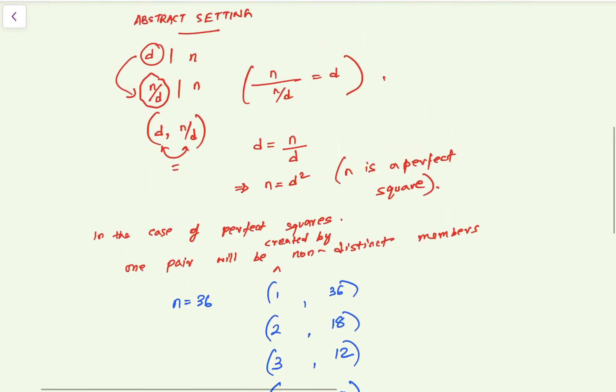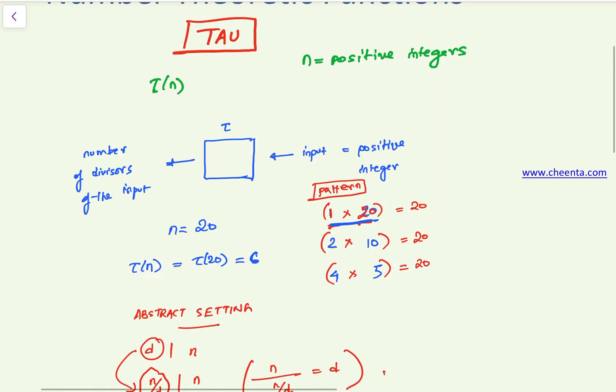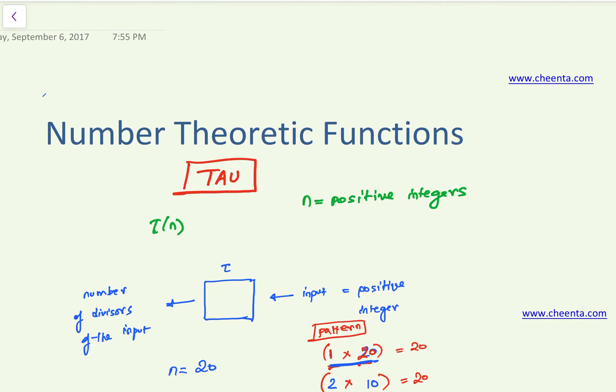Now try to comprehend the beauty of this number theoretic function, the power of it. I mean, even if you do not know what n is, if you know something about tau of n, not even the actual value of tau of n, if you know the parity of tau of n, whether it's even or odd, you can tell something very interesting about the number itself. And that is the precise use of these number theoretic functions. They are sort of used as signatures.